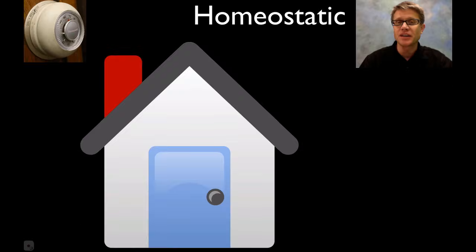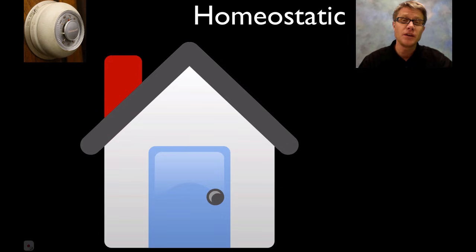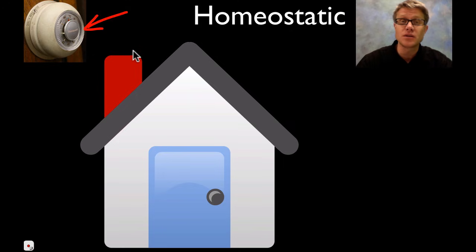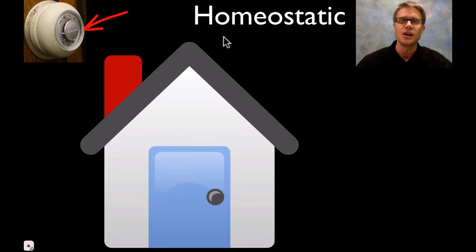Hi, it's Mr. Andersen and in this podcast I'm going to show you how humans use feedback loops to maintain homeostasis. In a house we use a thermostat — you basically set it at 70 degrees Fahrenheit. If the temperature goes below that your heater kicks on; if it goes above that your heater kicks off. And so this is a homeostatic loop.